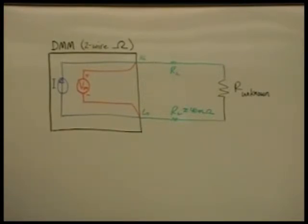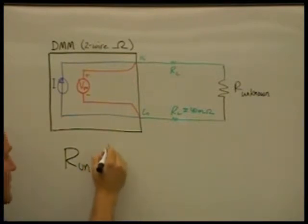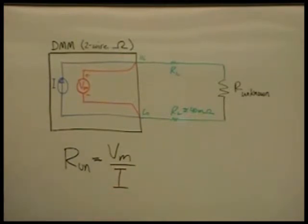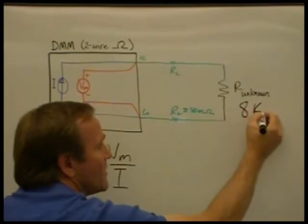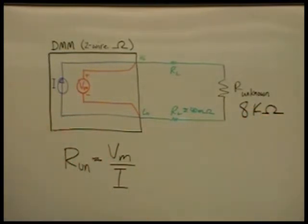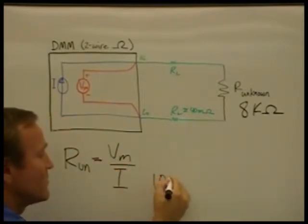Let me go through an example so you can see how this works. We want to calculate the unknown resistance, and that will be the measured voltage divided by the DC current. Let's assume we're going to measure an 8k ohm resistor. If we have the voltmeter in auto-ranging mode, it will automatically range up to the appropriate range, being 10 kilohms. And at that point, the constant current will be 100 microamps.